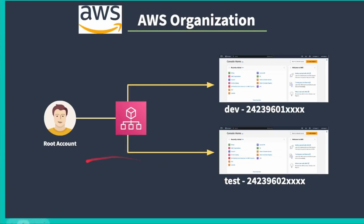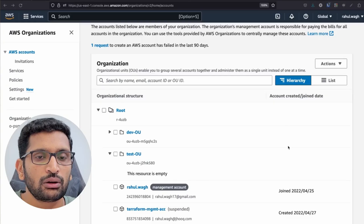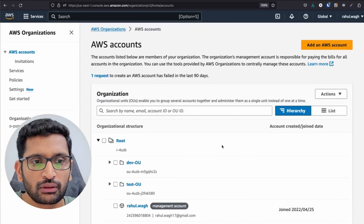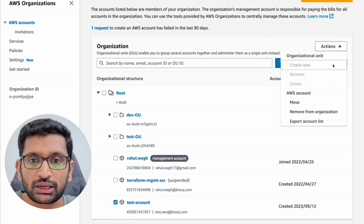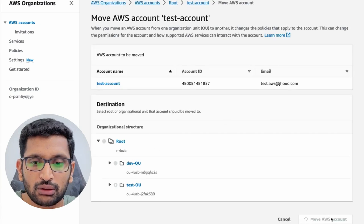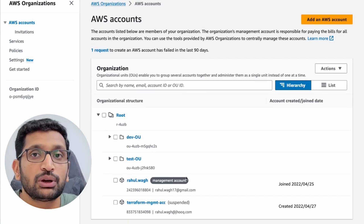Going back to the slides: initially there was one root user for the existing signup account, but when I created the test account, I'm also going to get a root user for that particular test account. Each account you create will always have its own root user, and that root user will have all privileges for that account. After refreshing, I can see the test account was created but needs to be moved into the Test OU — select it, go to Actions, Move, select the Test OU, and confirm.